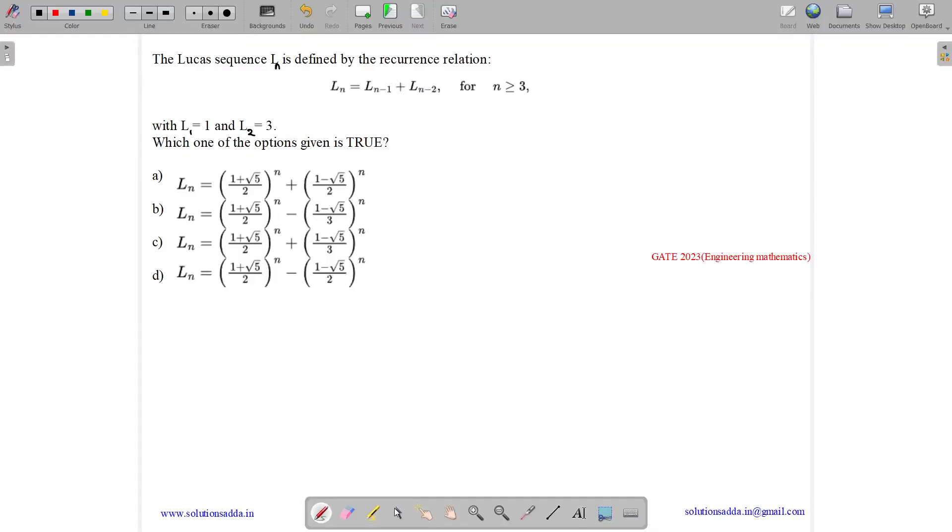This question belongs to engineering mathematics subject and was asked in CSE 2023. So the question states, the Lucas sequence L is defined by the recurrence relation Ln = Ln-1 + Ln-2 for n is greater than equal to 3 with L1 equals to 1 and L2 equals to 3.